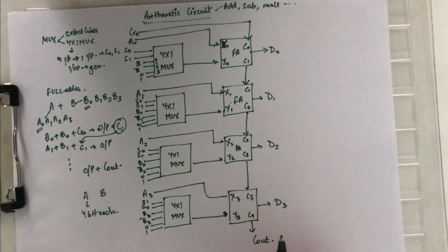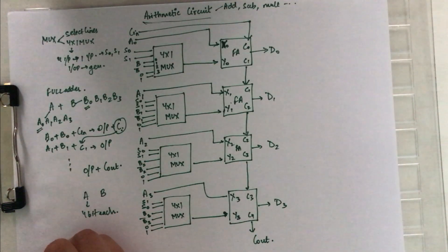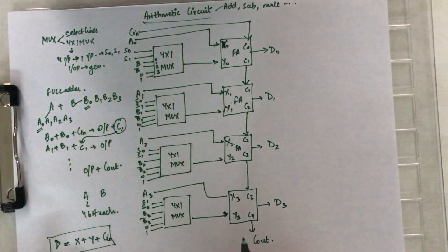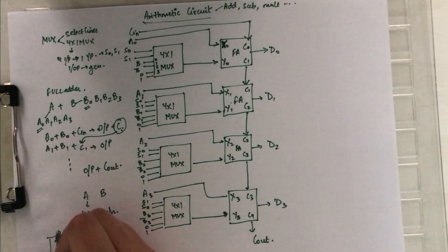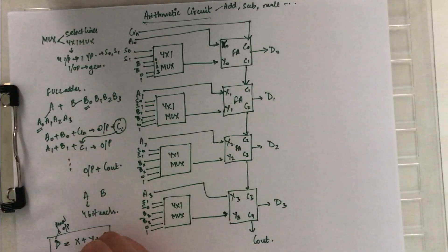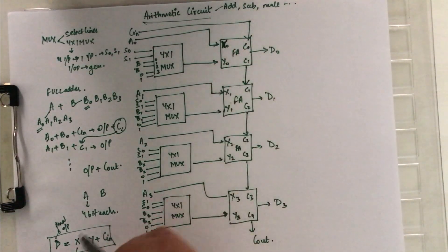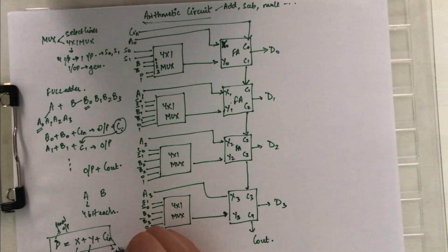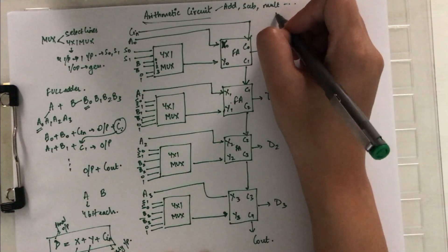Now let's see how this arithmetic circuit works on the basis of a truth table. The arithmetic circuit works on the equation: D = X + Y + C-in. This equation gives us all the arithmetic operations performed using this circuit, where D is the final output, X is the A operand entering directly into the full adder, Y is the B operand which can be B, B-complement, zero, or one selected on the basis of select lines S1 and S0, and C-in is the carry input.